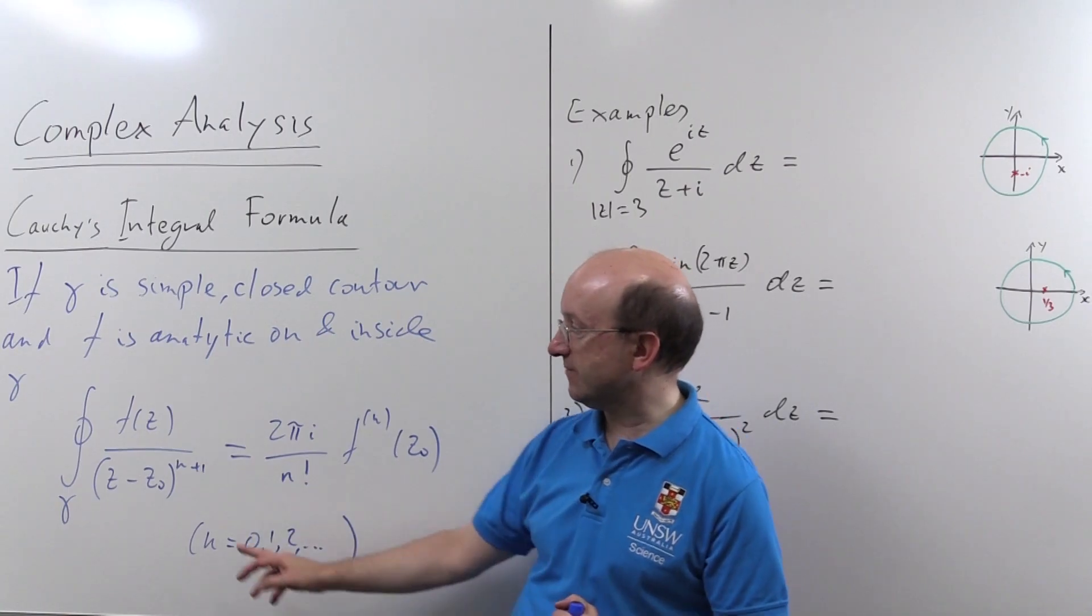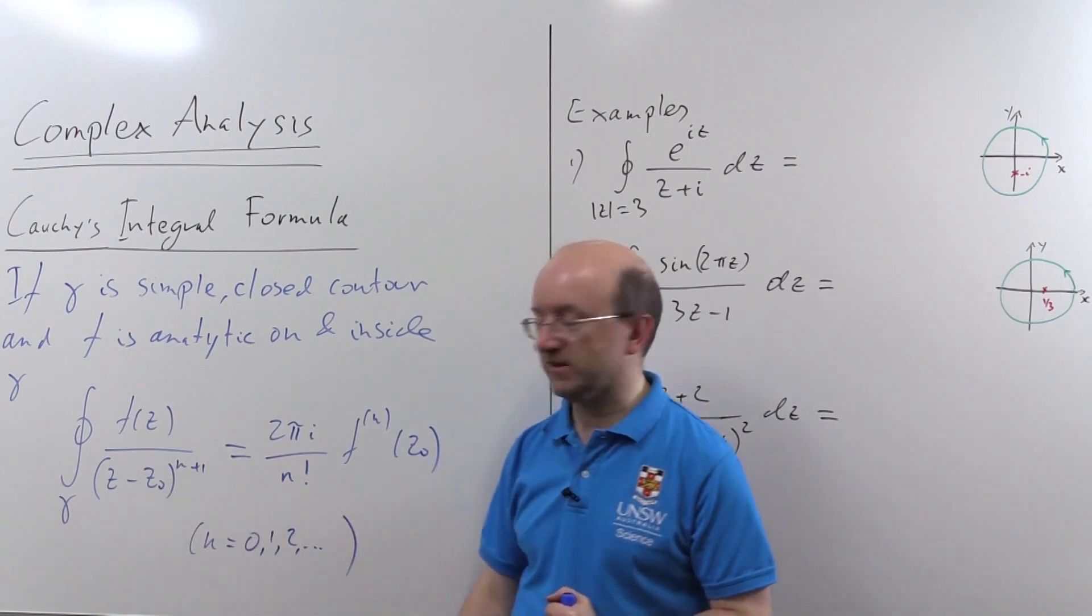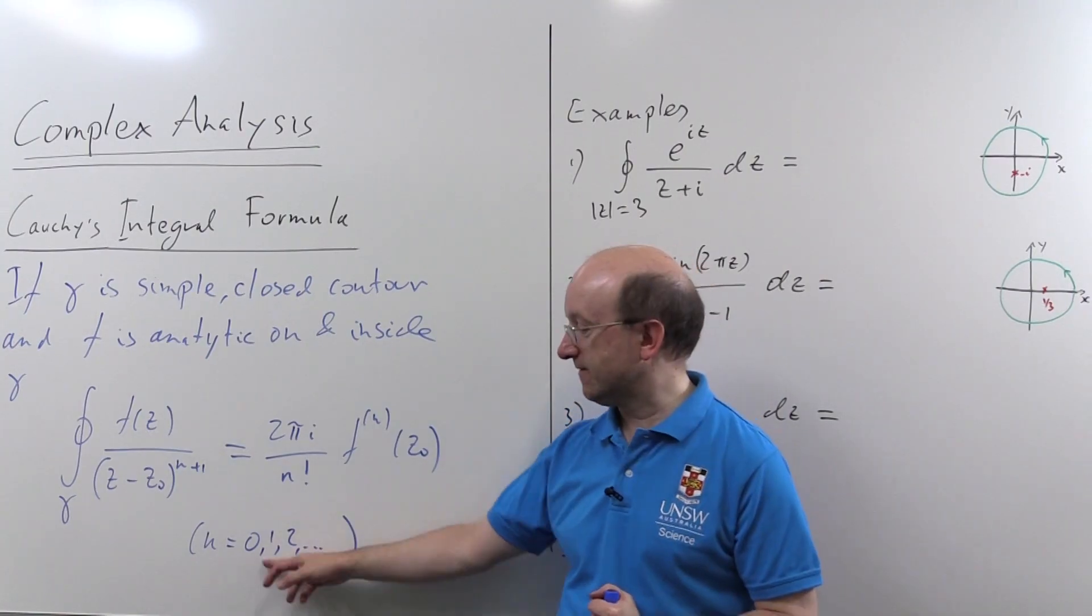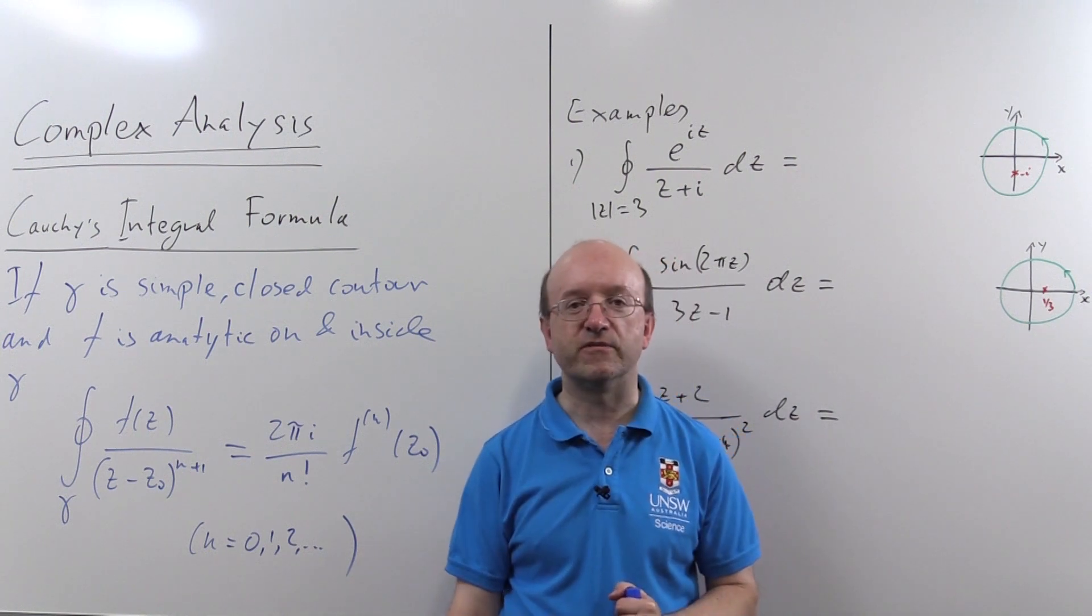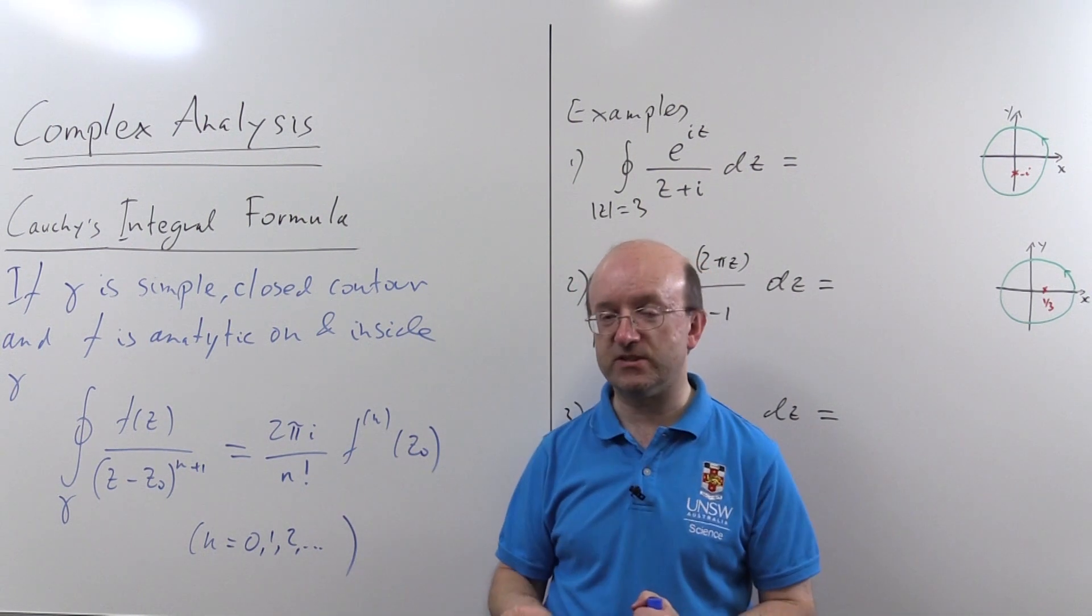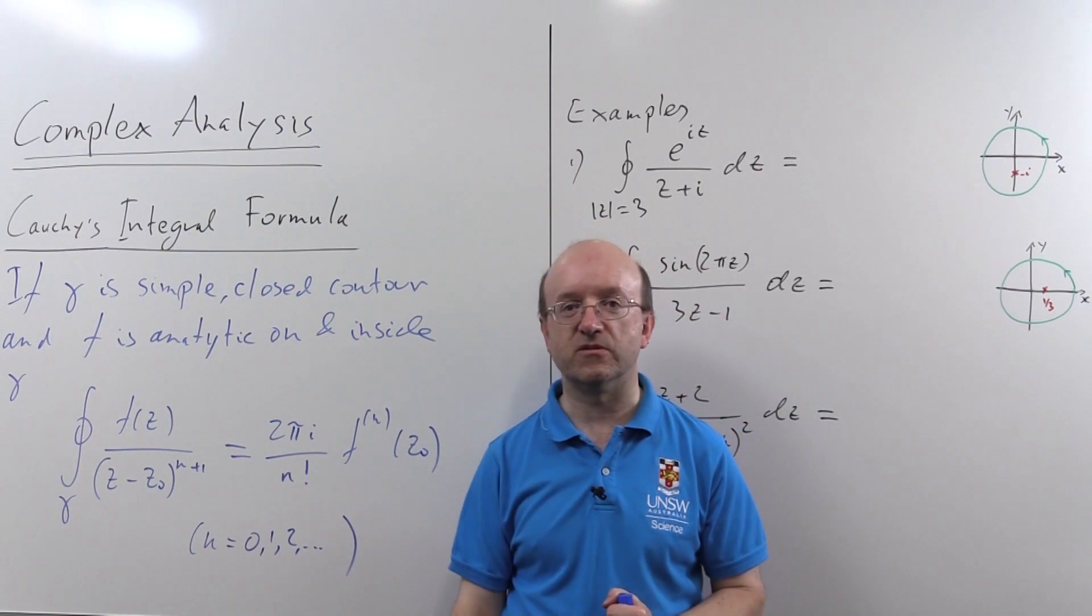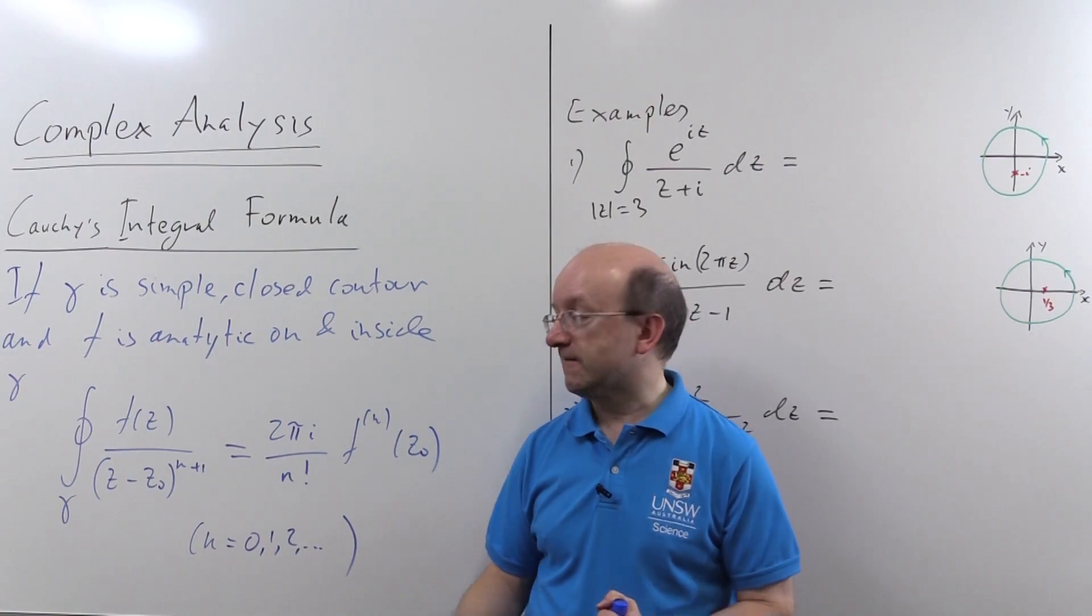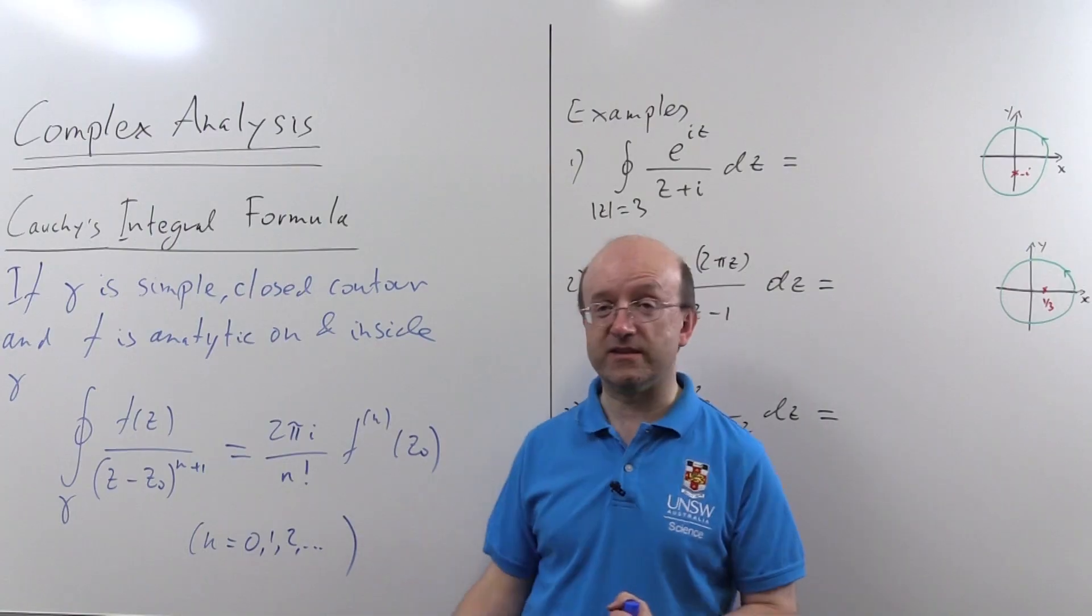Then we have this formula here. The integral around gamma f of z over z minus z dot to the n plus 1 for n, a non-negative integer, is 2 pi i over n factorial times the value of the nth derivative. That's what this notation means, f brackets n. The nth derivative of f at z dot. So in particular, for this integral, the value of the function is totally irrelevant except at z dot.